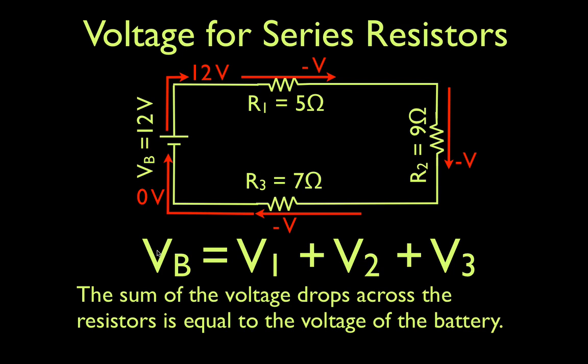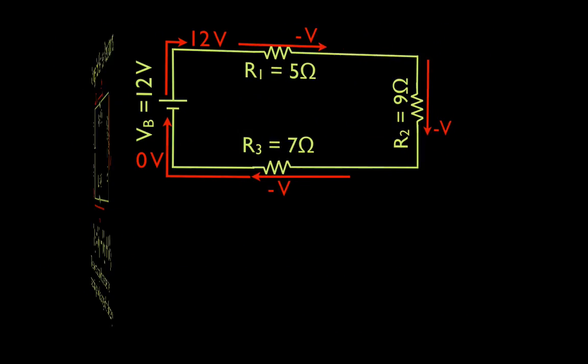And we sum that up like this: the sum of the voltage drops across the resistors is equal to the voltage of the battery. Now, we're actually going to go through and see if we can figure that out and see if that actually works.